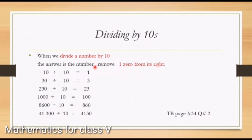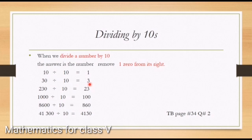Question three: 230 divided by 10 equals 23. We have one zero in 230 and one zero in 10, so we remove one zero from the right side of 230 and the answer is 23. Next: 1000 divided by 10 equals 100 — we remove one zero from 1000. Then 8600 divided by 10 equals 860 — we have two zeros in 8600 and one zero in 10, so we remove one zero and it becomes 860.